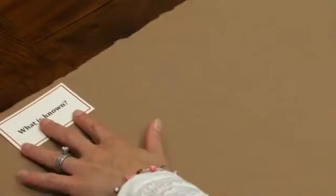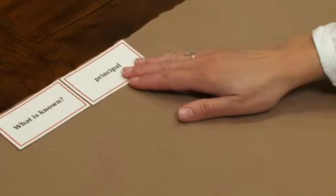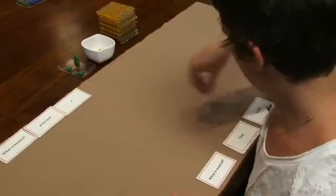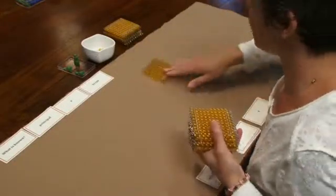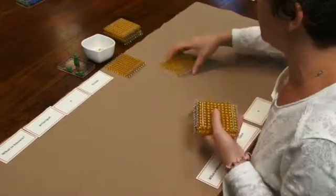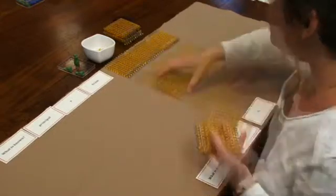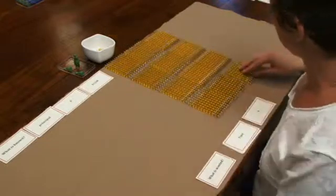So we're going to start with our first question, what is known? We know the principal, and that's $1,200. So we're going to lay out our cards for principal and then $1,200. And we're going to use the hundred squares to symbolize our $1,200 principal. So we have 100, 200, 300, 1100, 1200.